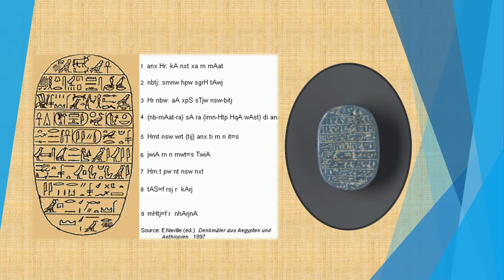Lacuna, live Horus, mighty bull appearing in truth. He of the two ladies, he establishes the laws, he pacifies the two lands. Gold Horus, great of strength, who smites the Asiatics, the king of upper and lower Egypt, lord of the two lands.